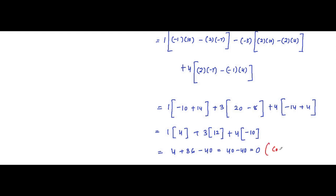Correcting the mistake: it should be plus 4, not minus 4. Such sign mistakes can happen when working quickly, so please be careful. With the correction, the third term becomes 4×(−14 + 4) = 4×(−10) = −40. The total is 4 + 36 − 40 = 40 − 40 = 0. Since the scalar triple product equals zero, by definition these vectors are coplanar vectors.